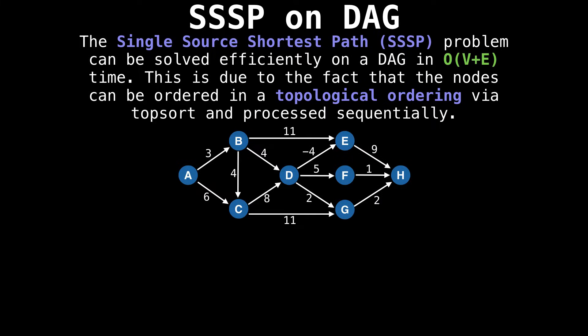Suppose this is the graph we're working with. You can verify that it is in fact a directed acyclic graph. What we wish to do is find the shortest path from node A to all other nodes in the graph.